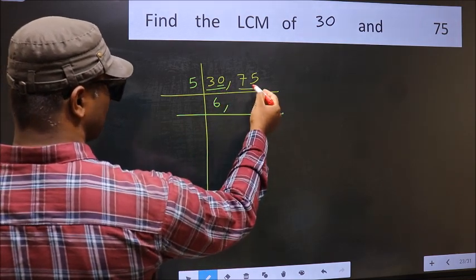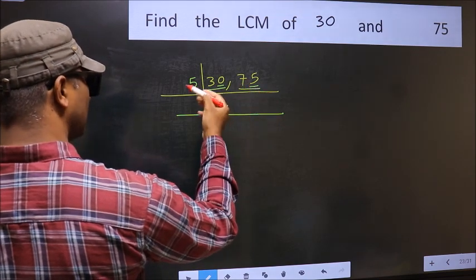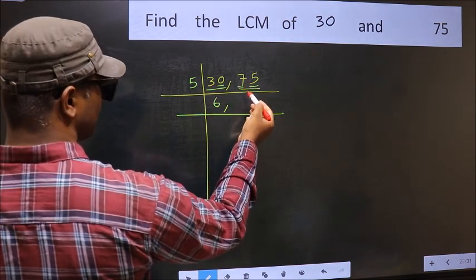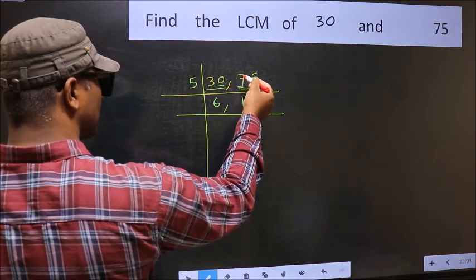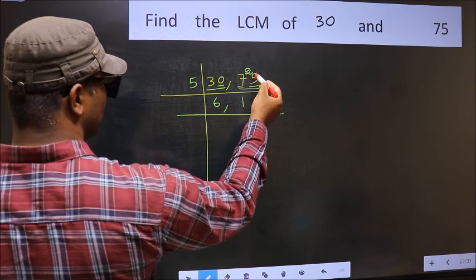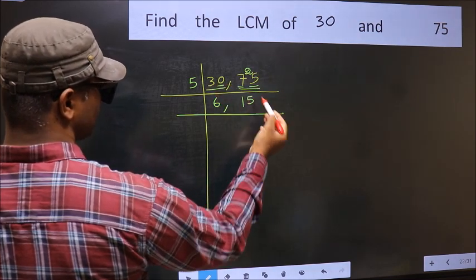The other number 75, last digit is 5, so this is divisible by 5. First number 7. A number close to 7 in 5 table is 5. 7 minus 5 is 2, 2 carried forward gives 25. When do we get 25 in 5 table? 5 times 5 is 25.